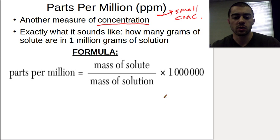Parts per million is exactly what it sounds like: how many grams of solute are there in one million grams of solution. The formula is on the back of your reference table, so you don't need to memorize this. Parts per million equals the mass of the solute divided by the mass of the solution times a million.